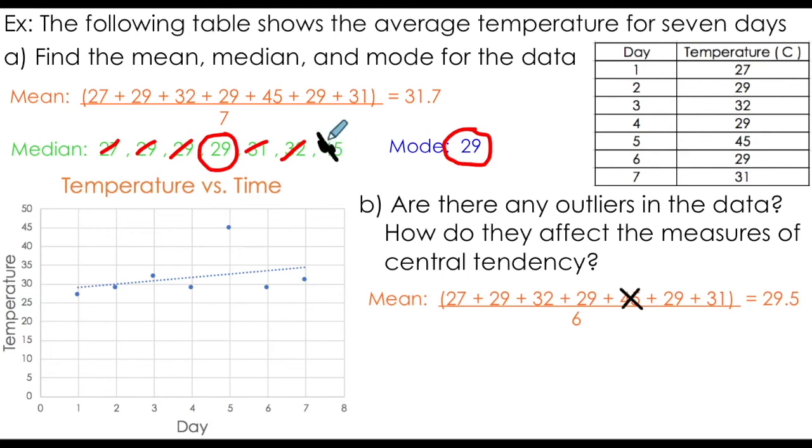If I remove it from my data set and look at the median, you can see that I'm forced to look at the average between 29 and 29, the two middle values of my new data set. This does not change my median of 29, suggesting that the 45 degree outlier does not affect the median in this case.